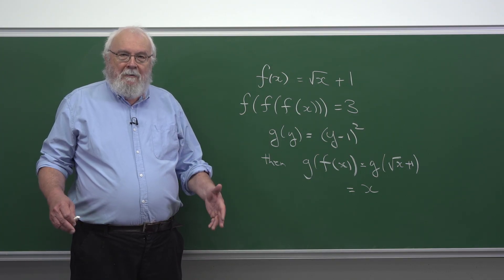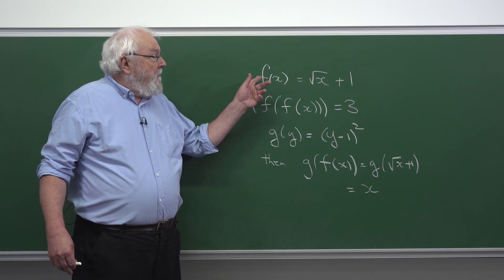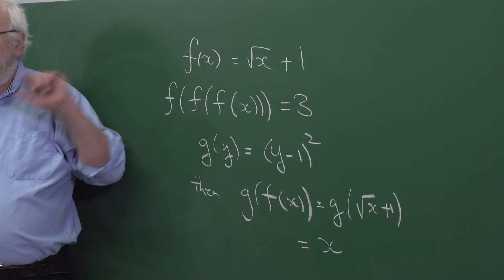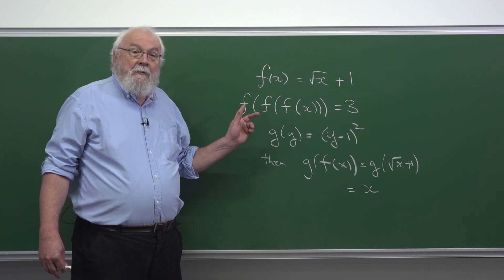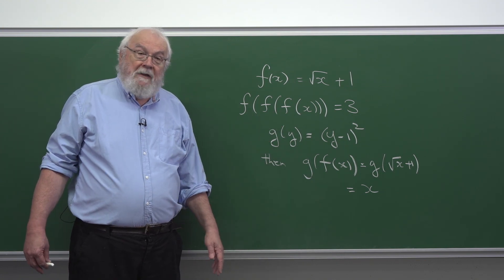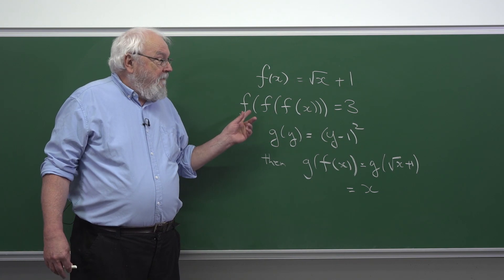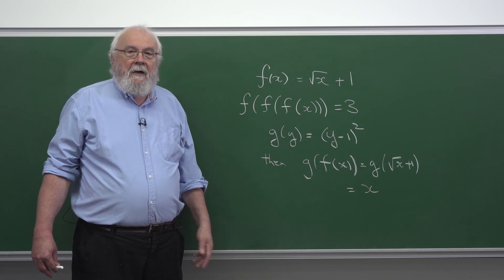Well, this horrible expression is actually built up out of a single easy function. Function of x is the square root of x plus 1. The point being that if you apply f three times, you get the disgraceful expression given in the question. So f of f of f of x is 3, and you want to find out what x is.